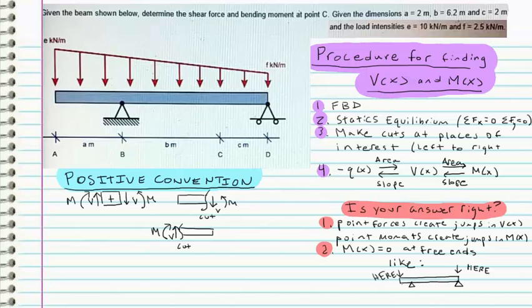Hey guys, I've got another problem request here. The problem asks us to find the shear force and the bending moment at C. It gives us some relevant dimensions and some load intensity. We have a distributed load on top. This is a solid mechanics problem and we're going to follow a step-by-step procedure for finding our shear force and our bending moment.